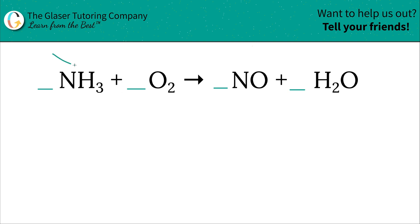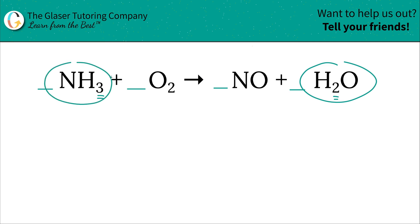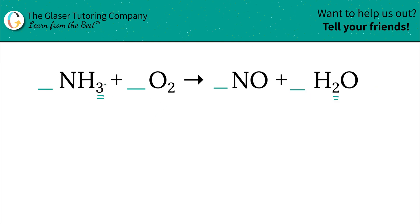Moving on — next I'll look at hydrogen. I have three hydrogens on the left, and on the right I have two hydrogens. Hydrogen also exists in only one compound on each side, so I like to work with that. Obviously three does not equal two, so we have to balance it.